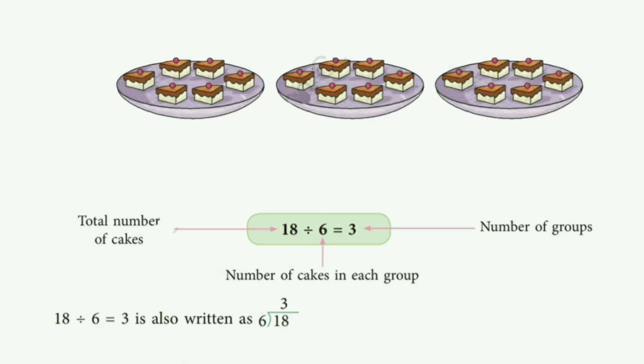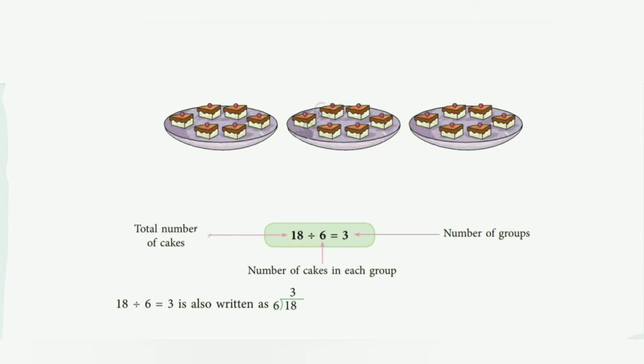Division is also used to find the number of equal groups. Now suppose there are 18 cakes, you can see 18 cakes are there, and you want to put them into groups of 6. Now you have to see: total number of cakes are 18, how many cakes are there in each group? 6. Number of cakes in each group is 6. So you have to see how many groups did you make?